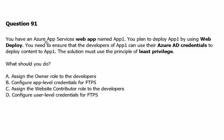You have an Azure App Services web app named App 1. You plan to deploy App 1 by using Web Deploy. You need to ensure that developers of App 1 can use their Azure Active Directory credentials to deploy content to App 1. The solution must use the principle of least privilege. What should you do?